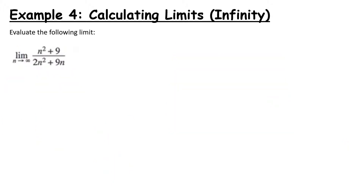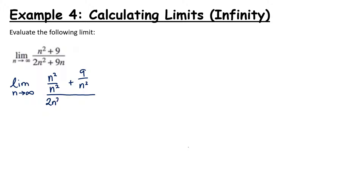Let's look at another example with infinity. Find the limit as n goes to infinity of n squared plus 9 all over 2n squared plus 9n. Using the exact same logic as before, we have the limit as n goes to infinity, and we divide everything by the variable to the highest power — which in this case is not n, but n squared.